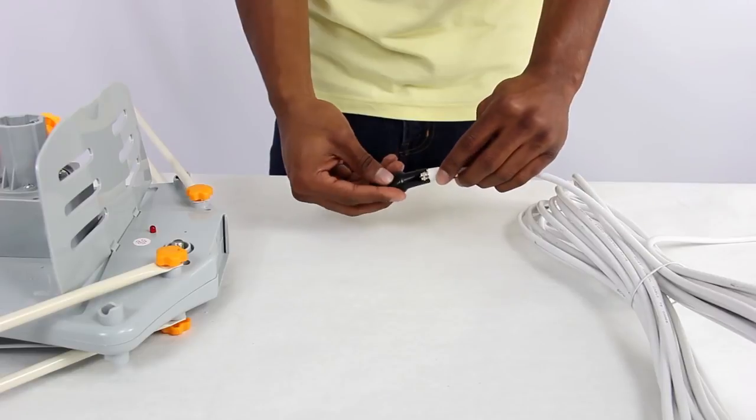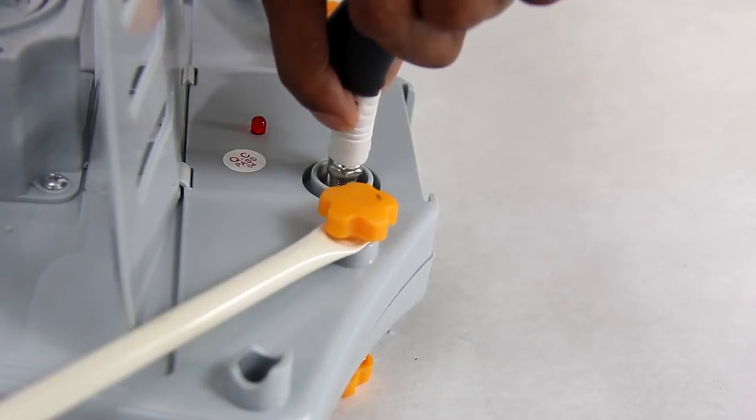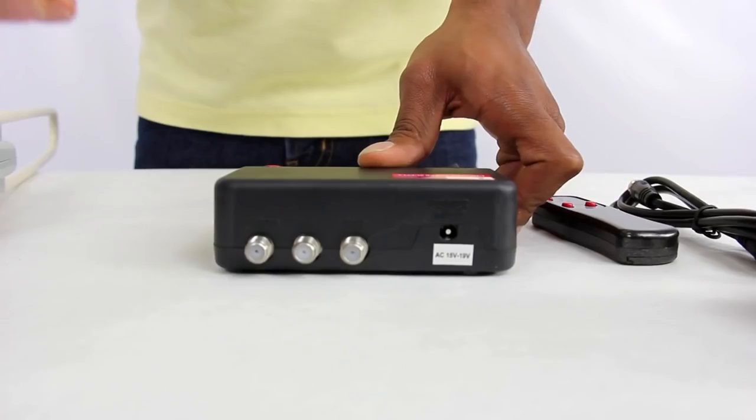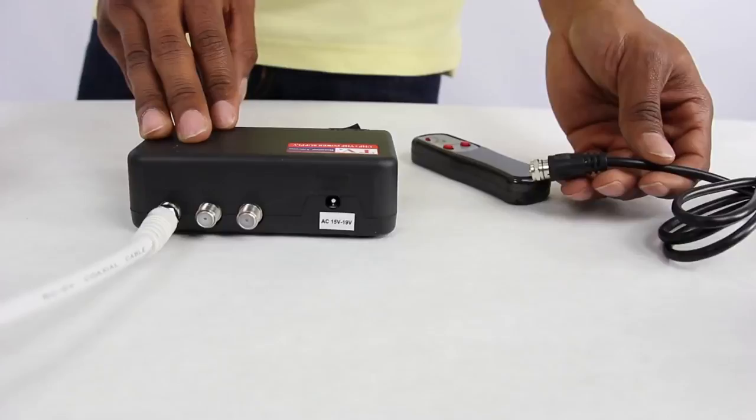Attach the black rubber covering to one end of the coaxial cable and attach to the F connector on the main unit. Attach your coaxial cable to the antenna output jack.